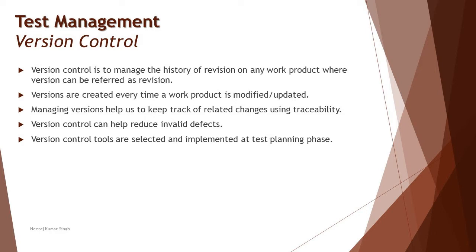Version 1.0 is the first time a requirement has been written. Tomorrow we have further discussions, and there are some modifications — which could relate to adding a new piece of information, deleting something existing in the requirement, or editing a particular line of it. Any kind of modification that takes place in the requirement will be called a new change or modification. Here in our process, we don't just edit and save — we create a new version, for example 1.1.